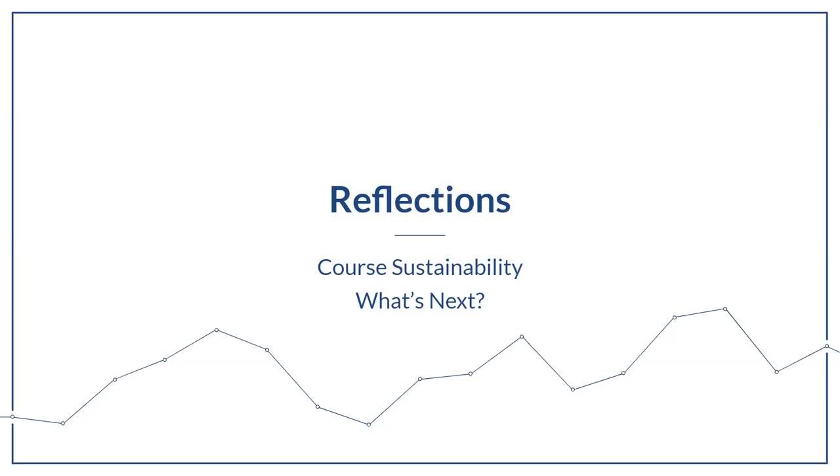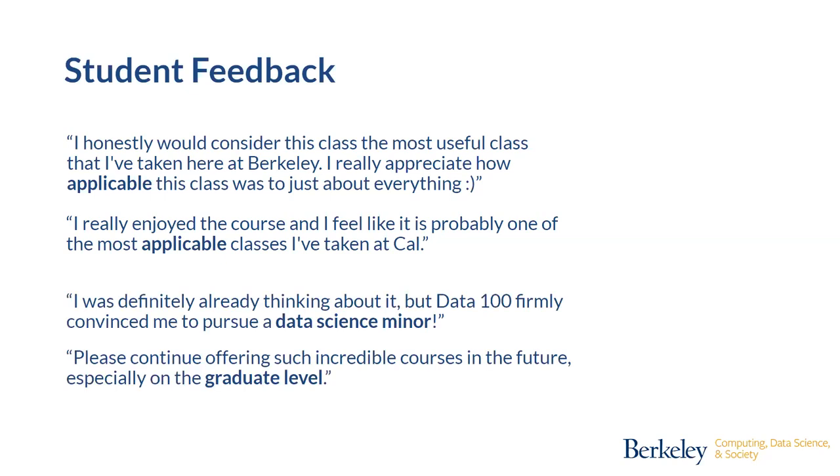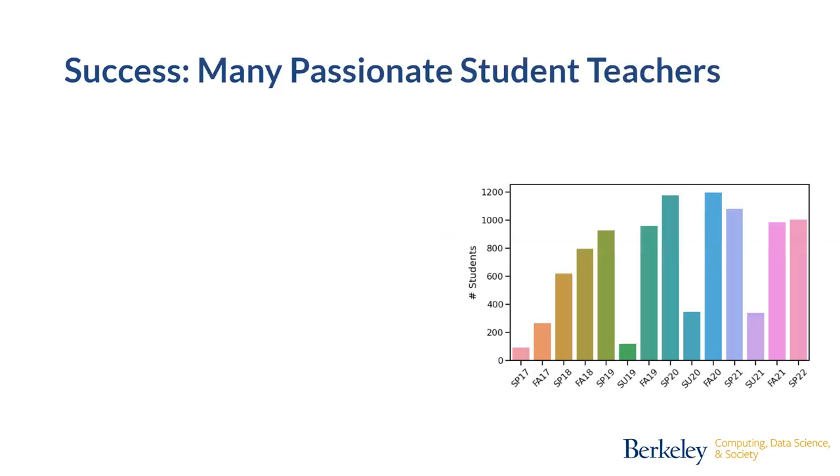So a few reflections, and I'll close. One of them is course sustainability. As you may expect, this course is actually quite big. But I will talk about that in one slide. This is a little bit of cherry picked feedback, but bear with me. I honestly would consider this class the most useful class that I've taken here at Berkeley. I really appreciate how applicable this class was to just about everything. I really enjoyed the course and I feel like it is probably one of the most applicable classes I have taken at Cal. I've bolded things for emphasis, but you can see the applications are key to Data 100. What else is key to Data 100 is where it lies in the major and in a lot of the degree programs. I was definitely already thinking about it, but Data 100 firmly convinced me to pursue a data science minor. Please continue offering such incredible courses in the future, especially on the graduate level. Data 100 is what we call a mezzanine course. So it's cross-listed not only across a lot of departments, but it's also cross-listed in undergraduate and graduate programs as well.